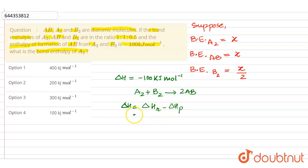So the overall enthalpy is given as -100. We will put -100 equals enthalpy of reactants. Reactants are A2 and B2, so as it is A2, it will be half of a single A2, so it will be x by 2 plus half of